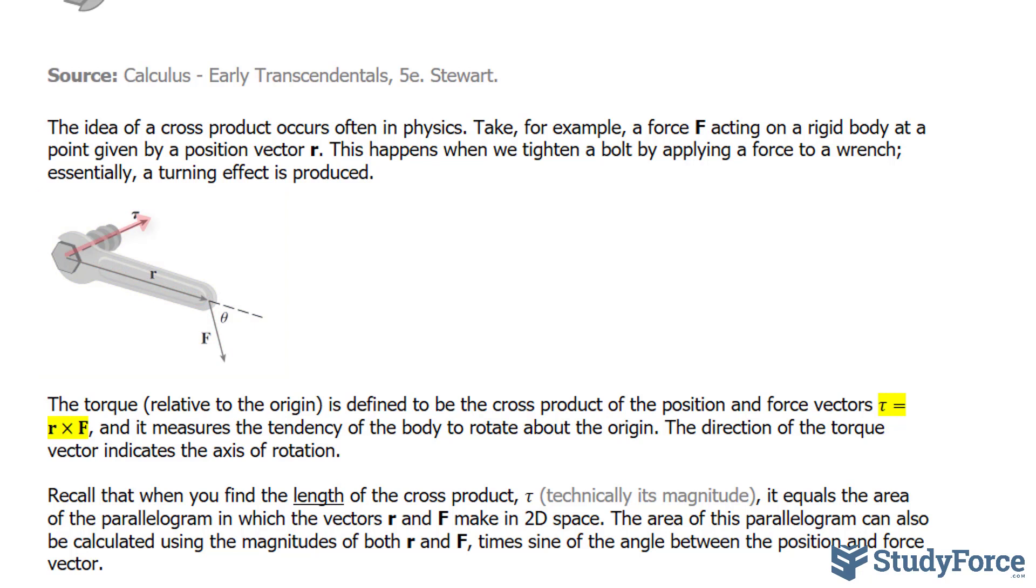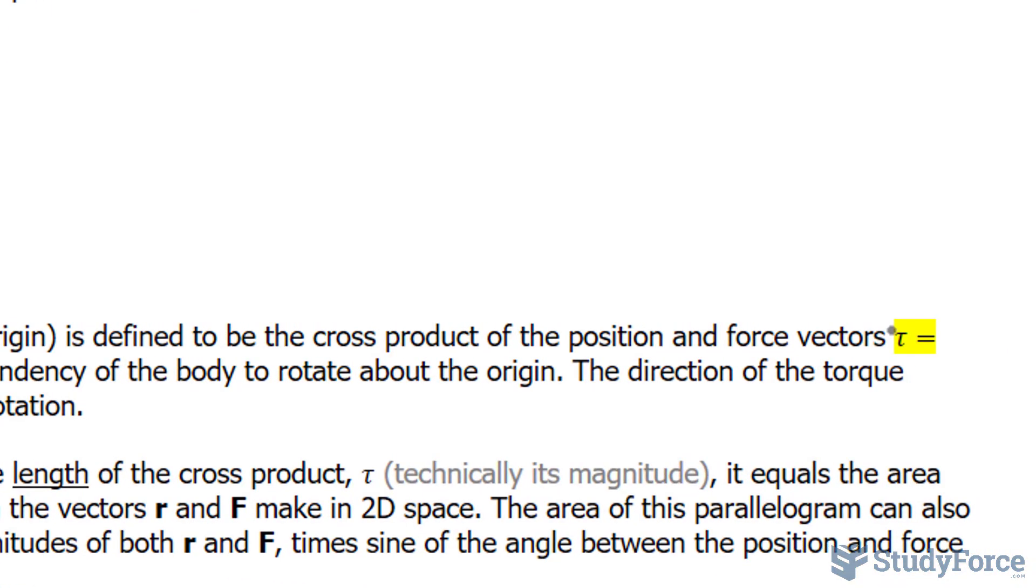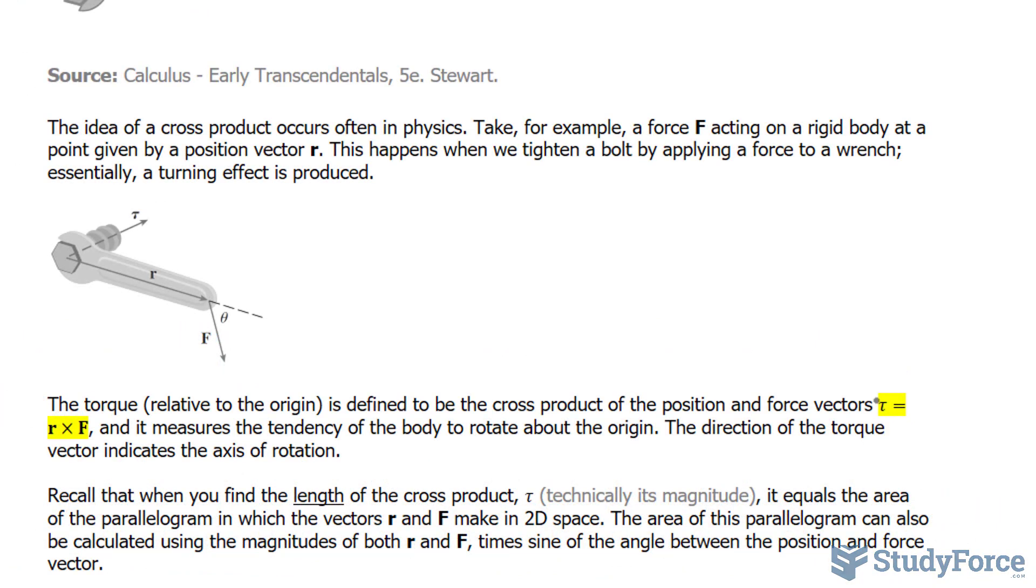The torque in this situation is defined to be the cross product of two vectors, the position vector and the force vector shown in this relationship here, where this symbol represents tau, the Greek letter, and torque measures the tendency of the body to rotate about the origin. So once you find the cross product of these two vectors, you end up with a third vector, which is the torque vector, and the direction of that vector indicates the axis of rotation.